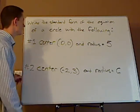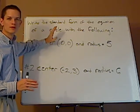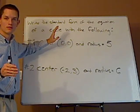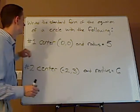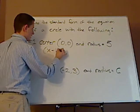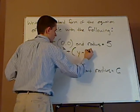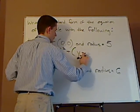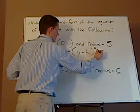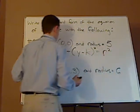Now, the key thing in this problem is that you need to know what the standard form is of an equation of a circle, and that is (x - h)² + (y - k)² = r², radius squared.